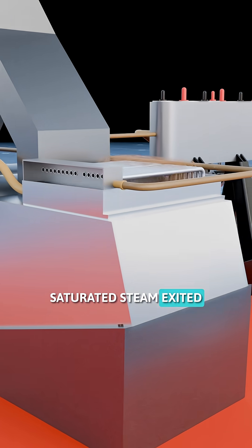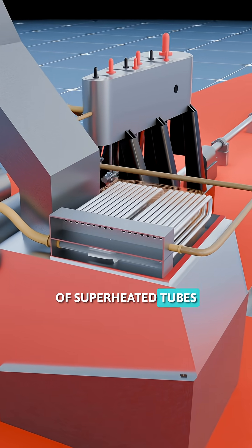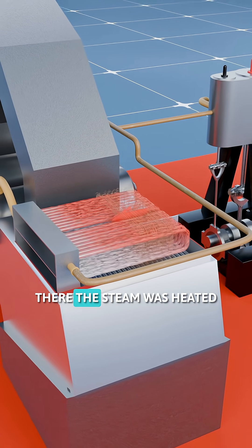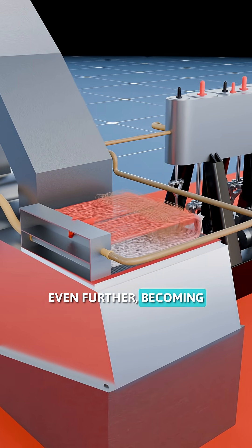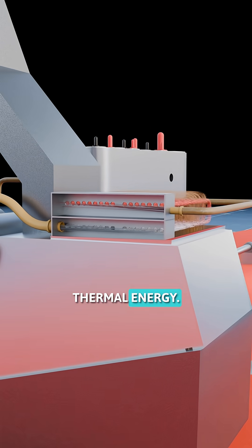Saturated steam exited from the top of the steam drum and passed into a set of superheater tubes positioned directly in the path of the hot exhaust gases. There the steam was heated even further, becoming superheated steam which contained more thermal energy.